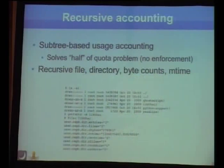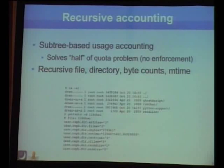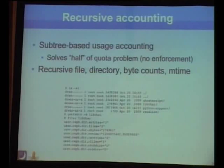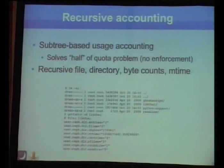One of the more interesting features is a recursive accounting mechanism that keeps track of file counts, directory counts, byte counts, and modification times for all directories in the system—essentially solving the accounting side of the quota problem. In a directory listing, file sizes appear large because each value is a total summation over all file sizes recursively beneath that point in the hierarchy, subsuming the functionality of du without a recursive scan. When your file system is filling up, you can immediately see from a directory listing where all the space is being used.